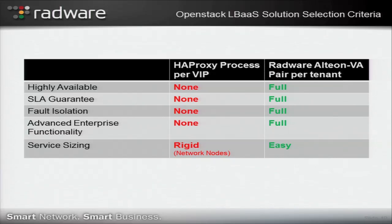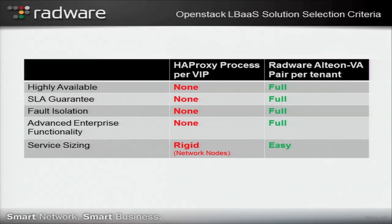The key difference between our solution and the embedded HA Proxy solution is high availability. The HA Proxy solution is not highly available — if you lose the network node supporting your load balancer, your load balancing service is disconnected. Our solution guarantees SLA because resources are provisioned specifically for each tenant, with fault isolation and enterprise capability. You can deploy our load balancer in various sizes depending on your application's capacity requirements, providing a fully enterprise-ready solution for mission critical and performance critical applications on OpenStack.